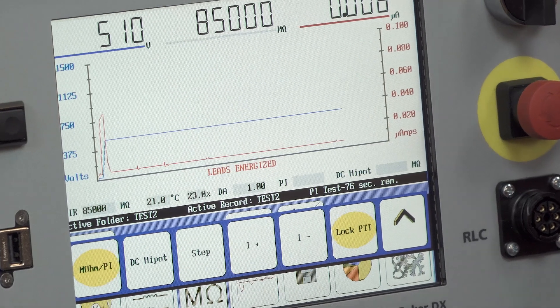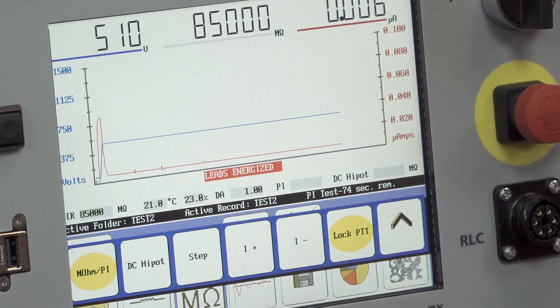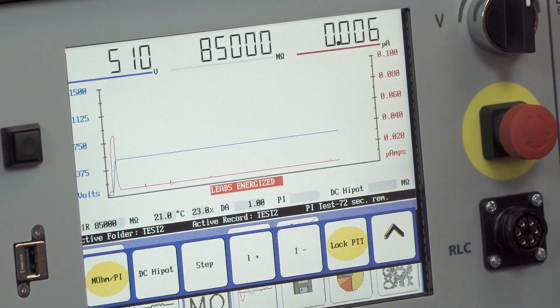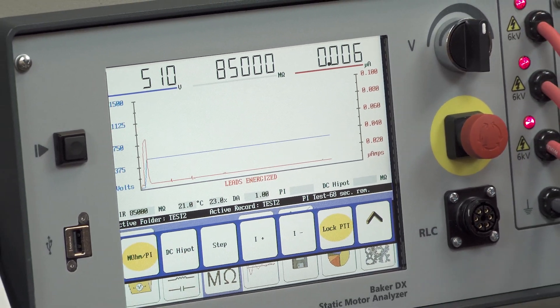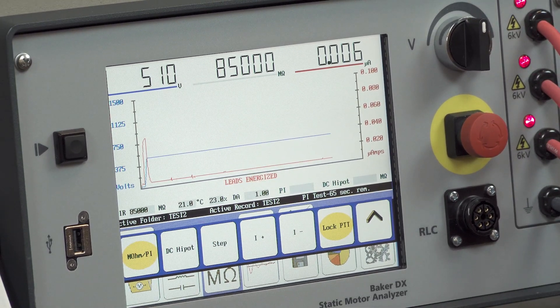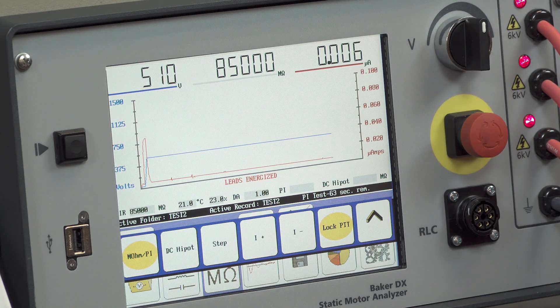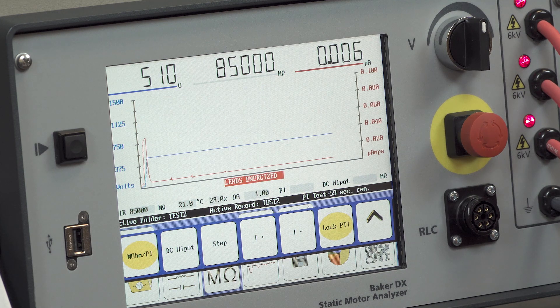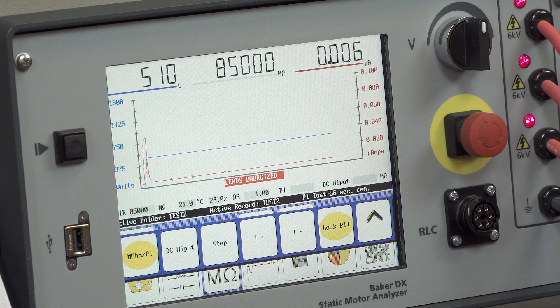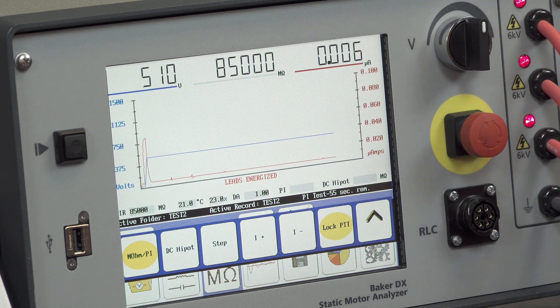From there we're going to naturally transition into our high potential testing, which could either be done as a conventional high pot where we'd ramp directly to test voltage and hold for one minute, or as I'll demonstrate in a step voltage high pot mode where we'll incrementally step in 500 volt increments in this case to 2,000 volts and then we'll hold for the final high pot.